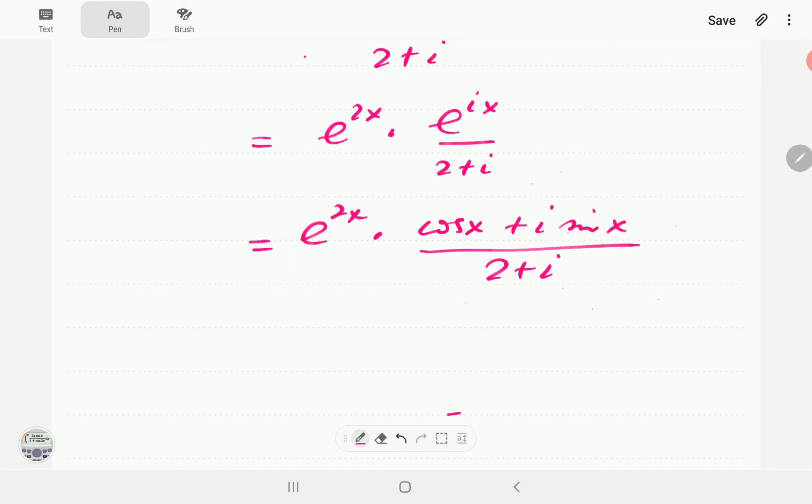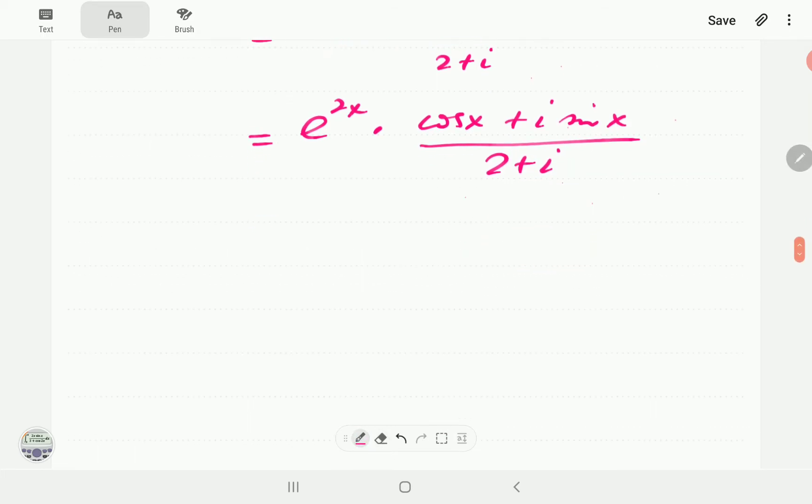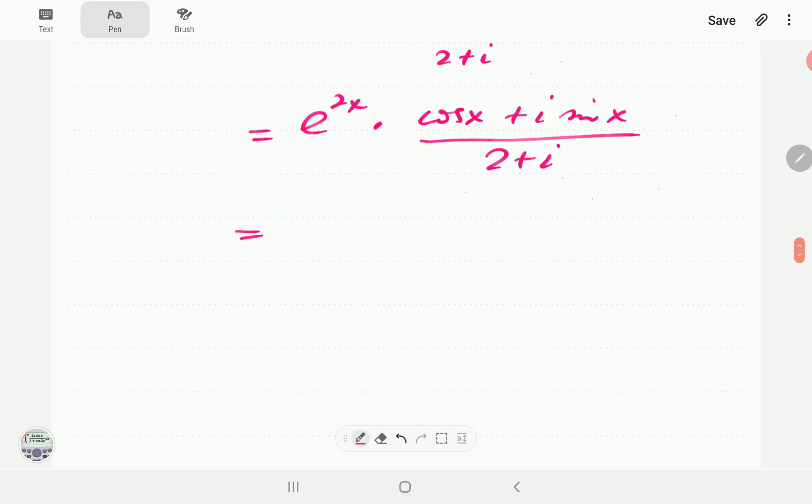And then you're going to remember that in order for us to divide by 2 plus i, we multiply both numerator and denominator by the complex conjugate of 2 plus i. So I'm going to multiply this by 2 minus i.